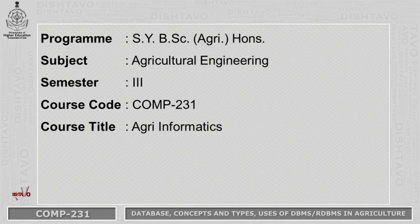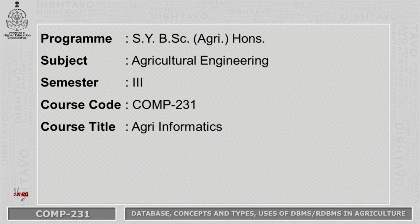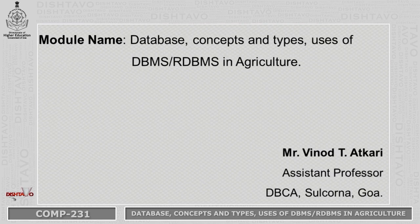Welcome students. Now we will discuss module 12 for the program 2nd year B.S. Agriculture Honours, subject Agricultural Engineering, third semester. The course code is COMP231 and the title of the course is Agriinformatics. The name of the module is Database Concepts and Types, Uses of DBMS in Agriculture. I am Mr. Vinodakari, Assistant Professor, Don Bosco College of Agriculture, Sulkorna, Goa.